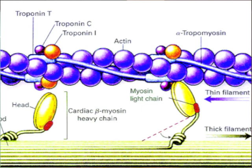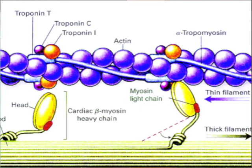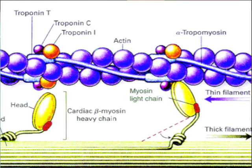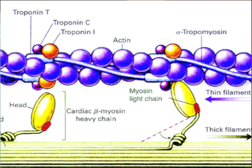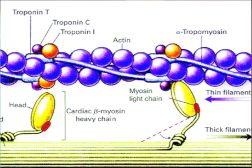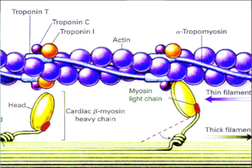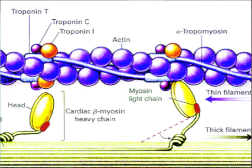The myosin head, which is a small globular structure — I'll put up a picture here — attaches to the binding site. This myosin head has ADP and PI on it, which is adenosine diphosphate and a separate phosphate ion. When the myosin head attaches to actin, it forms the active myosin complex. Every muscle tension event starts with the formation of the actin-myosin complex.